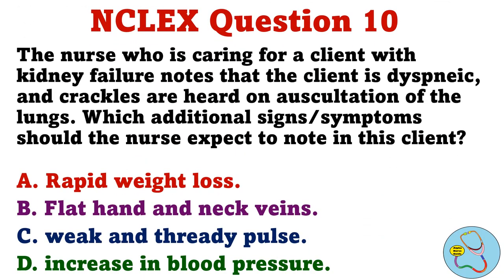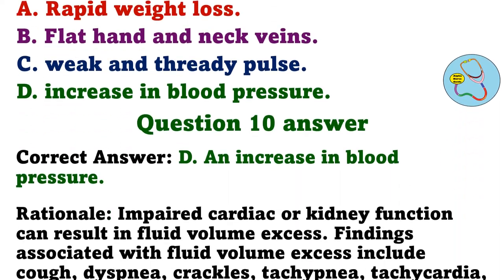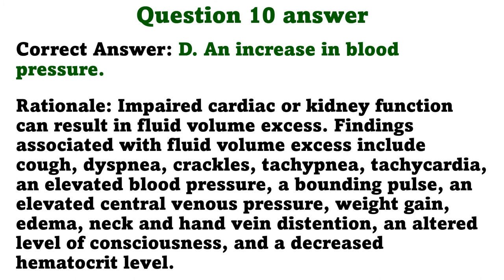Question 10. The nurse, who is caring for a client with kidney failure, notes that the client is dyspneic and crackles are heard on auscultation of the lungs. Which additional signs/symptoms should the nurse expect to note in this client? A. Rapid weight loss. B. Flat hand and neck veins. C. Weak and thready pulse. D. Increase in blood pressure. The correct answer is D. An increase in blood pressure. Rationale. Impaired cardiac or kidney function can result in fluid volume excess. Findings associated with fluid volume excess include cough, dyspnea, crackles, tachypnea, tachycardia, an elevated blood pressure, a bounding pulse, an elevated central venous pressure, weight gain, edema, neck and hand vein distension, an altered level of consciousness, and a decreased hematocrit level.